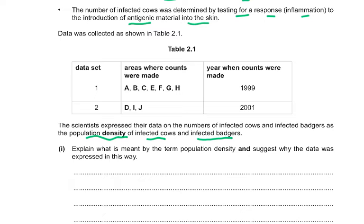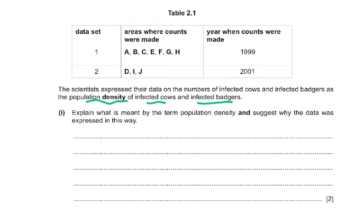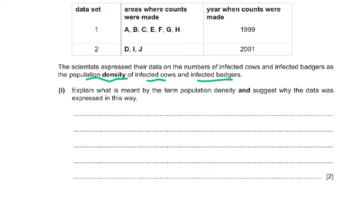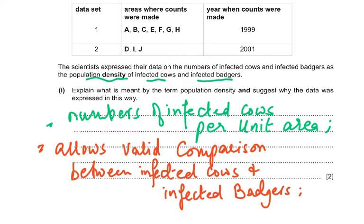The question asks: explain what is meant by population density and suggest why the data was expressed this way. Population density means the number of infected badgers or cows per unit area. This allows a valid comparison between the number of infected cows and infected badgers across different study areas.